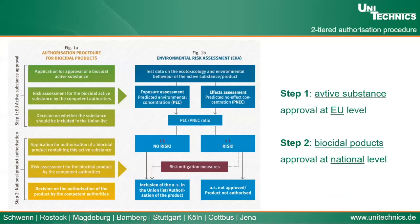Since they are poisonous, there is a very strict authorization procedure. The first step is that the active substances — anticoagulants — need to be approved at the European Union level with an environmental risk assessment. After EU approval, the biocidal products — the rodenticides — need to get another approval at national level, also associated with an environmental risk assessment.